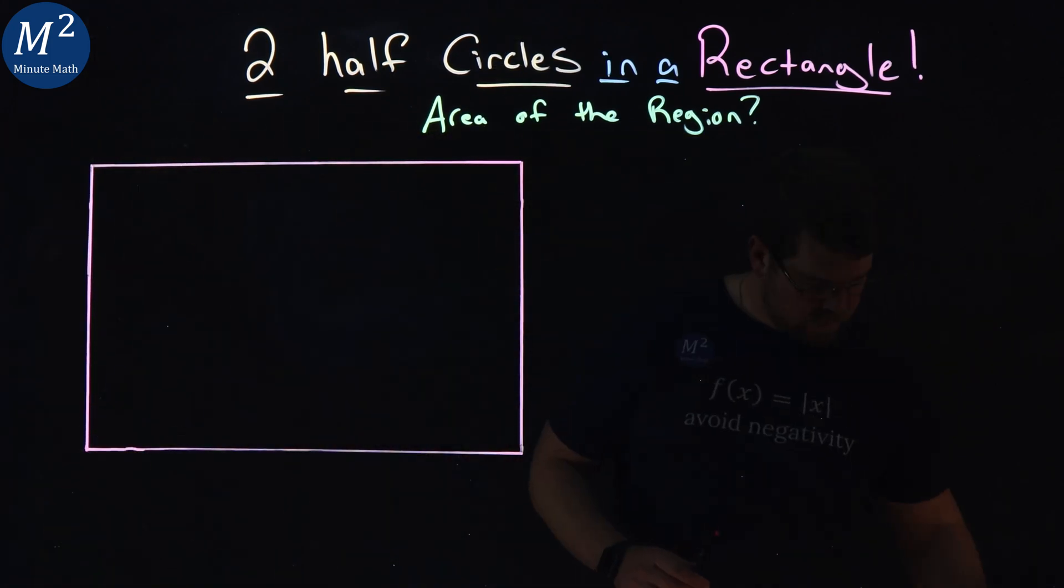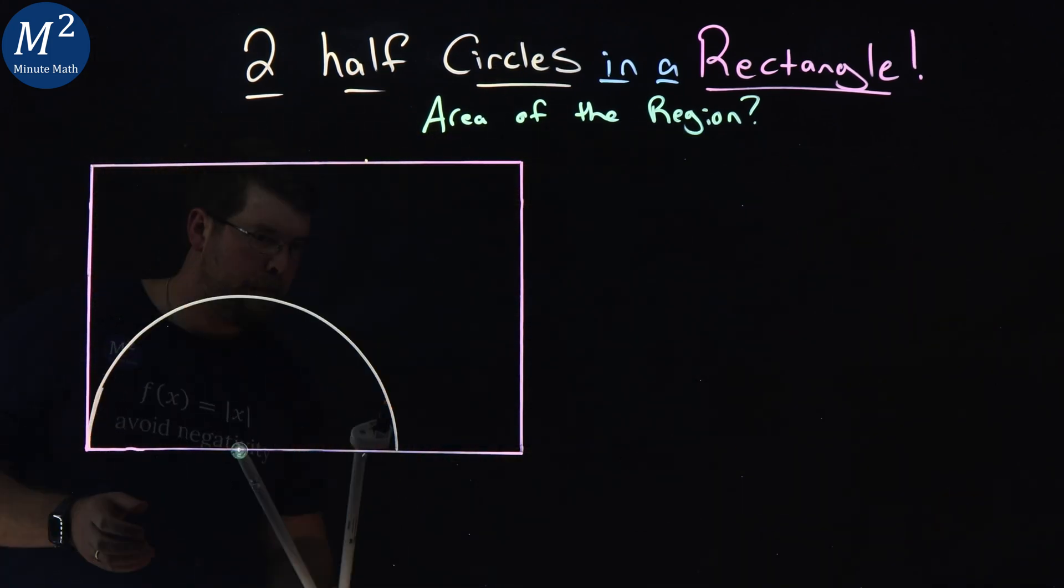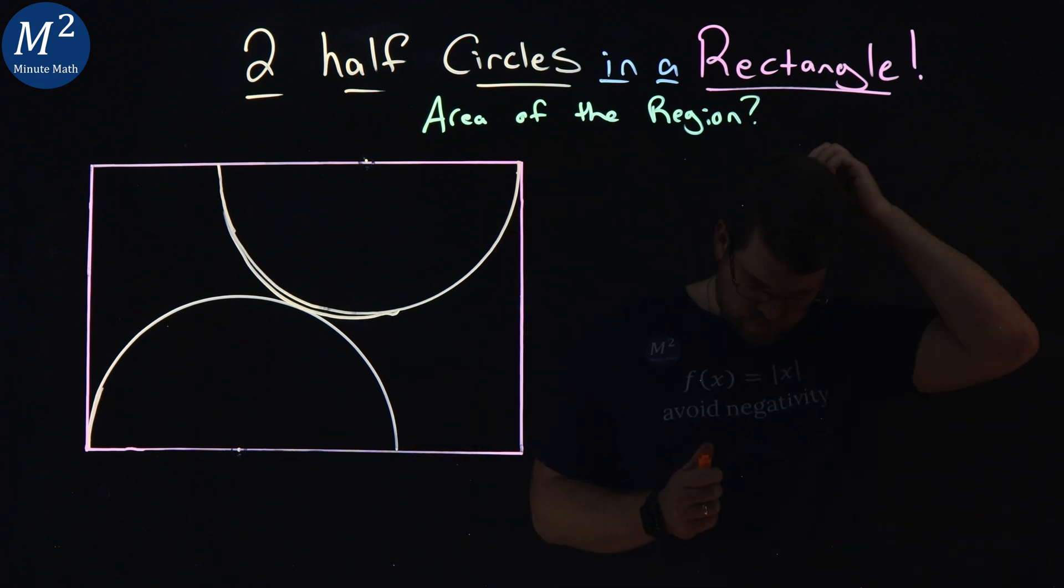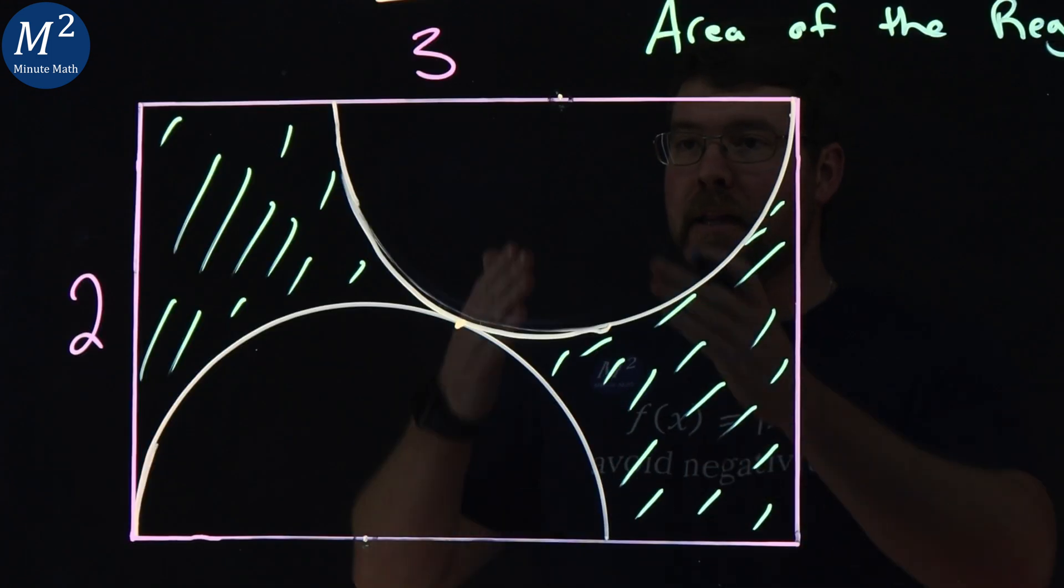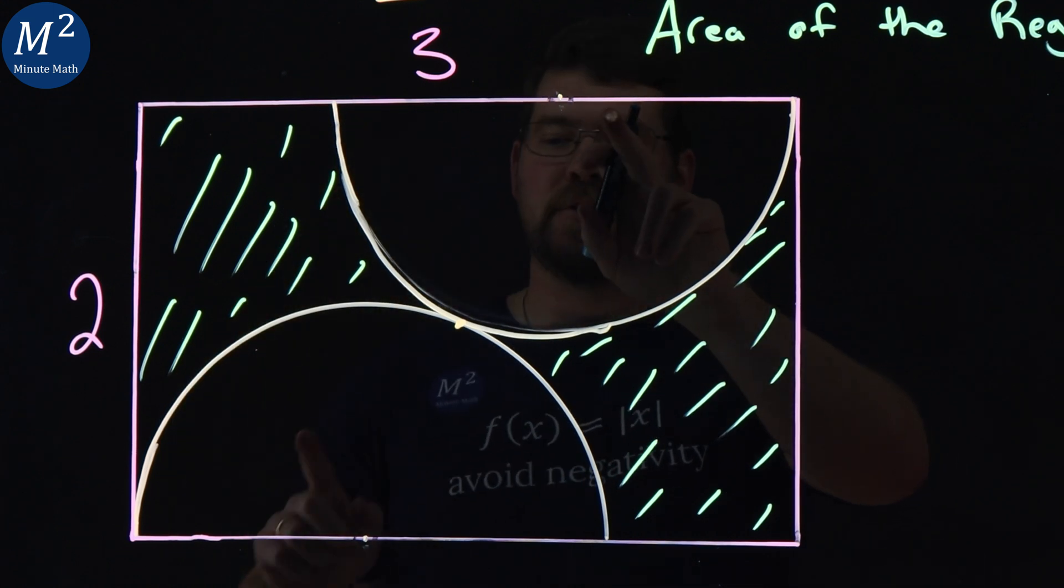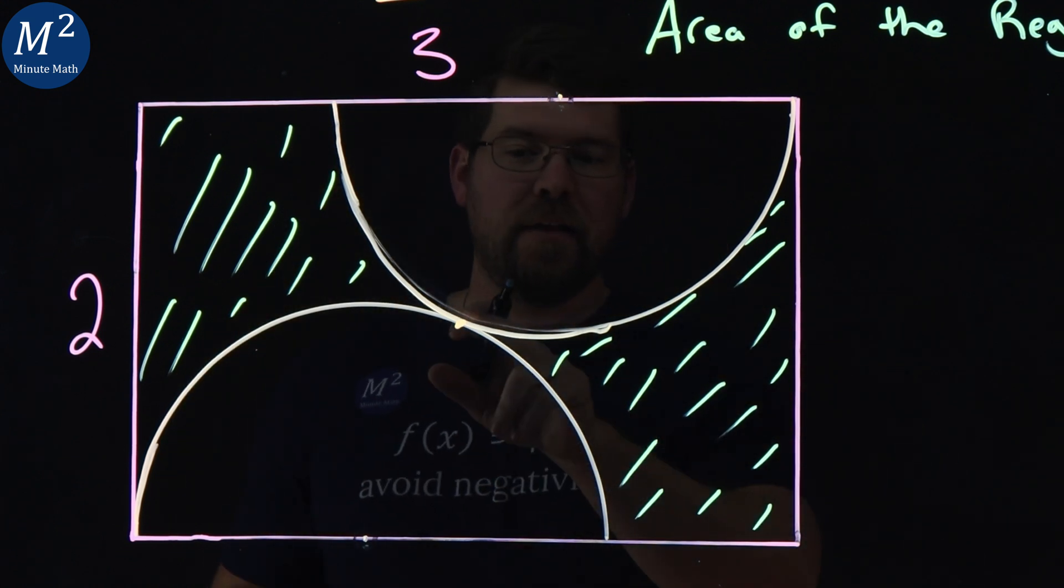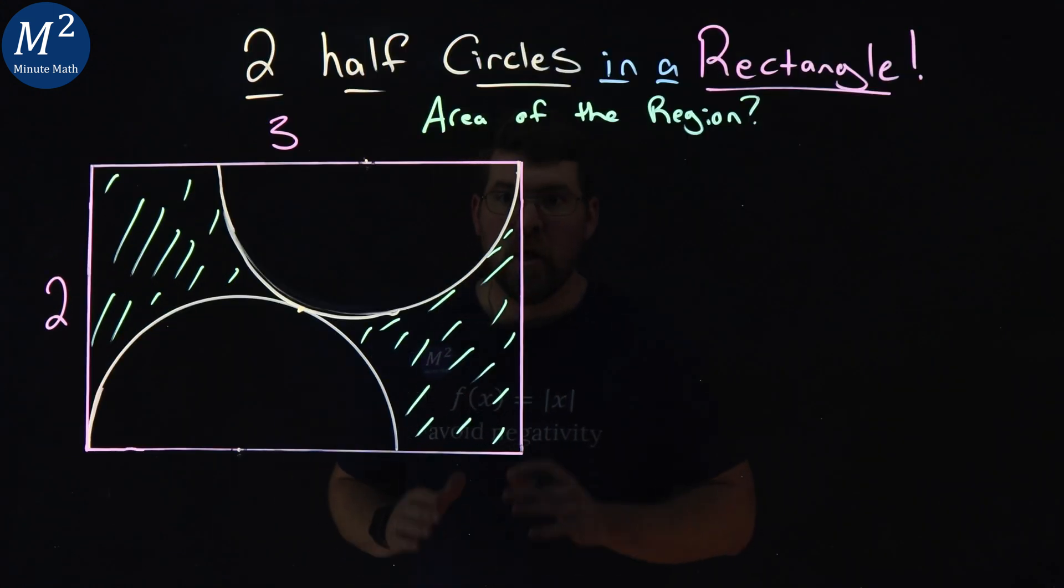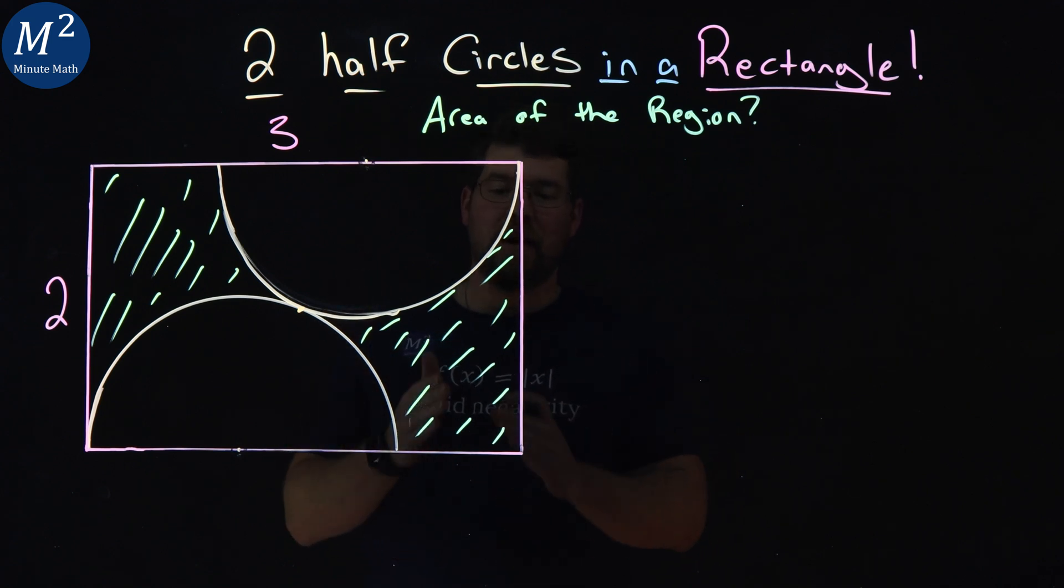Two half circles and a rectangle. This gives us this shaded region that we need to find the area of. Like we have right here, we have a side length of two and three. See how our two half circles are oriented? They touch right there. With just this information, can we find the area of the shaded region?